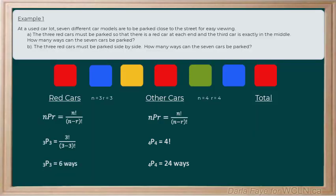Now to find the total number of ways to park the three red cars and the four other cars, we're going to multiply them together. Remember that keyword and tells us we need to use the fundamental counting principle and multiply them together. So here's my total: six ways to order the red cars. And there are 24 ways to order the other cars, which means that there are 144 total ways to order the cars.